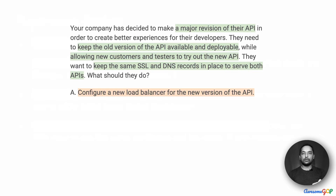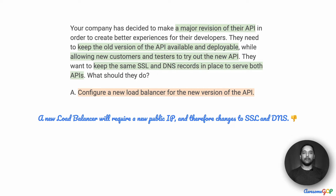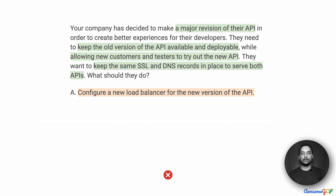With the requirements understood, now let's look at the options. Option A suggests configuring a new load balancer for the new version of the API. The existing version uses the current load balancer, and for the new API it says put up a new one. But a new load balancer will require a new public IP and therefore changes to either the DNS records or the SSL. So this is not a viable option, because we need to retain the same SSL and DNS records. Option A is not viable.